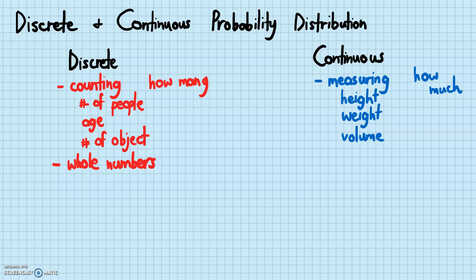When you say number of people, there's either one person or two people. You can't have 1.5 people, right? It's usually just one or two or three — just a whole number. And the same thing is true for age or number of objects. Discrete data is usually concerned with whole numbers.